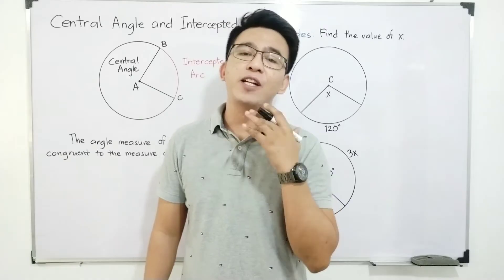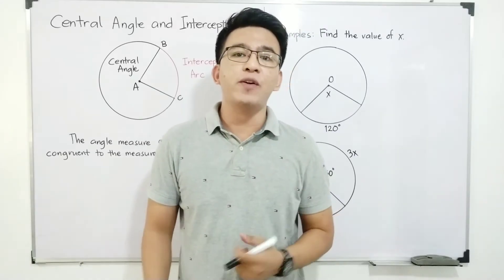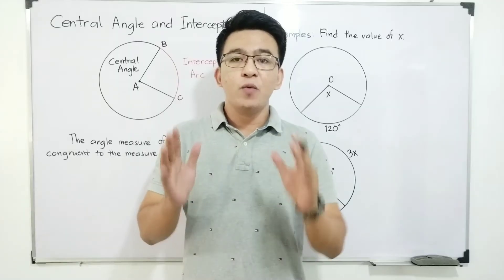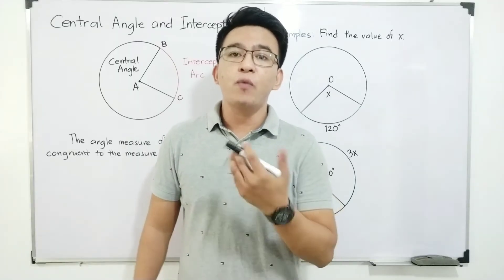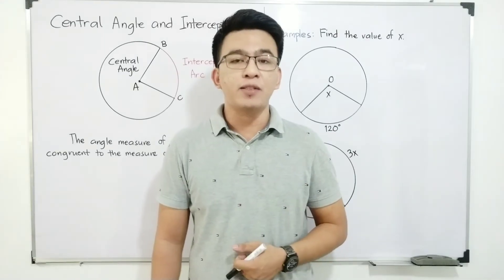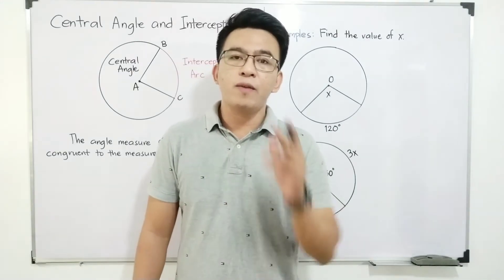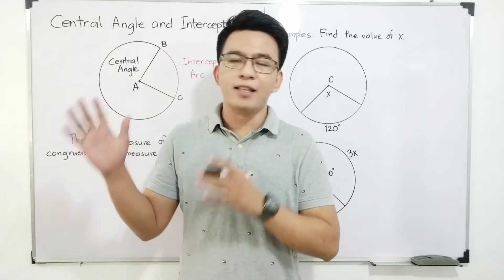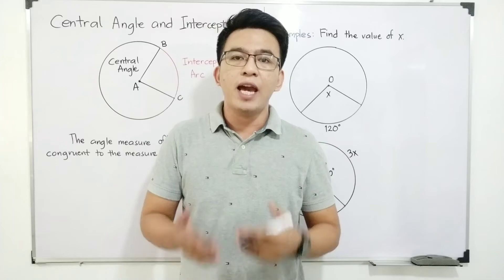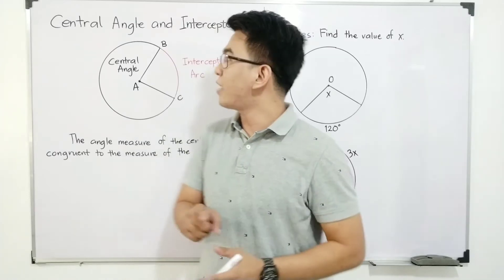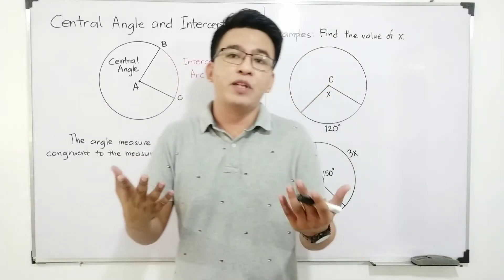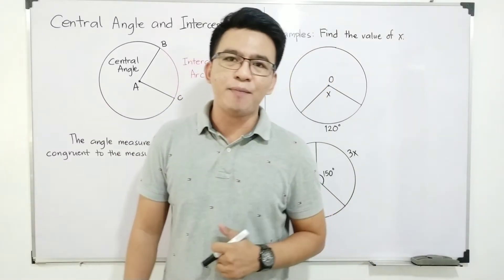Hi guys, it's me, teacher Goy. In our today's video, we will continue our discussion with regard to circles. Last time, we uploaded a video wherein we defined the circle and illustrated the different parts of the circle. And today in this video, we will talk about the different relationships of the angles inside the circle. We will start with the discussion of central angle and the intercepted arc. So without further ado, let's do this topic.